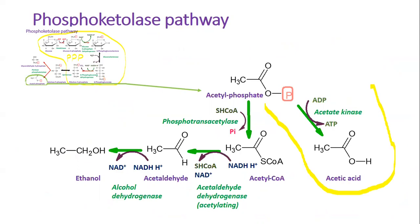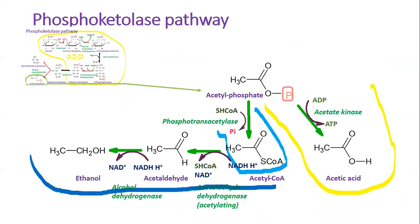Alternatively, acetyl phosphate can be converted into acetyl-CoA by phosphotransacetylase. Acetyl-CoA can then be reduced to ethanol, regenerating redox cofactors, or used as a precursor for many organic molecules.